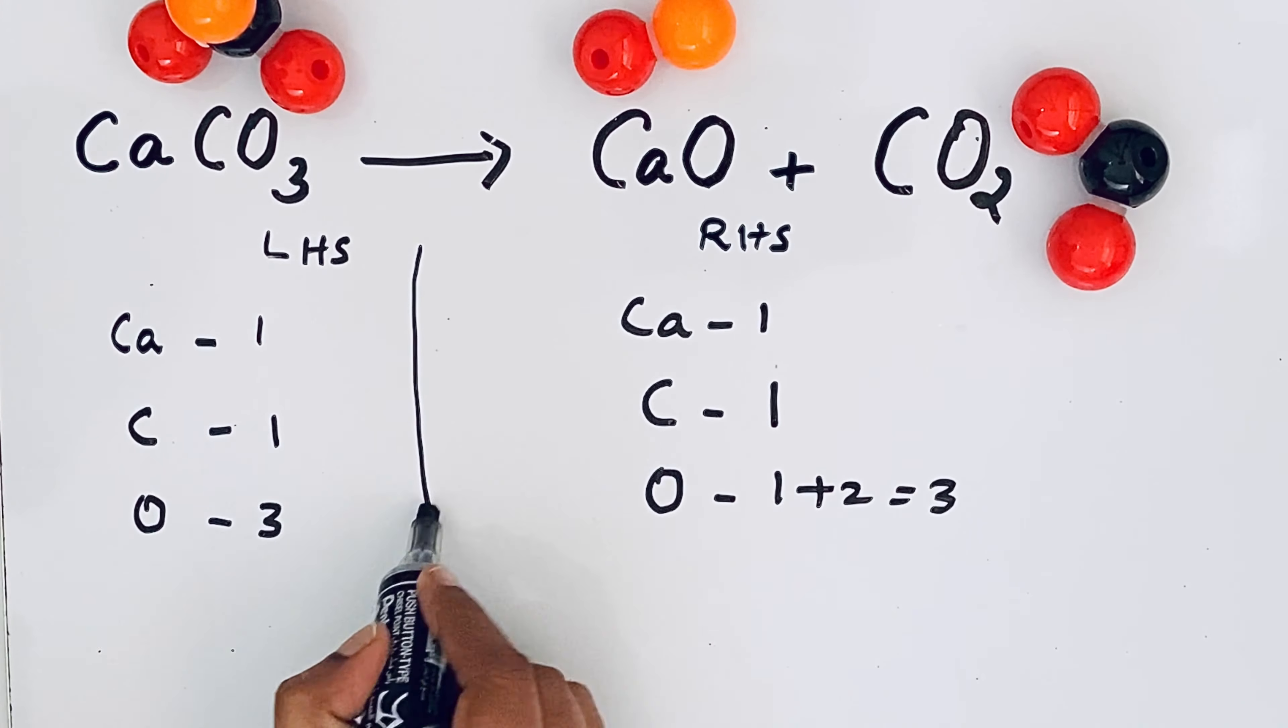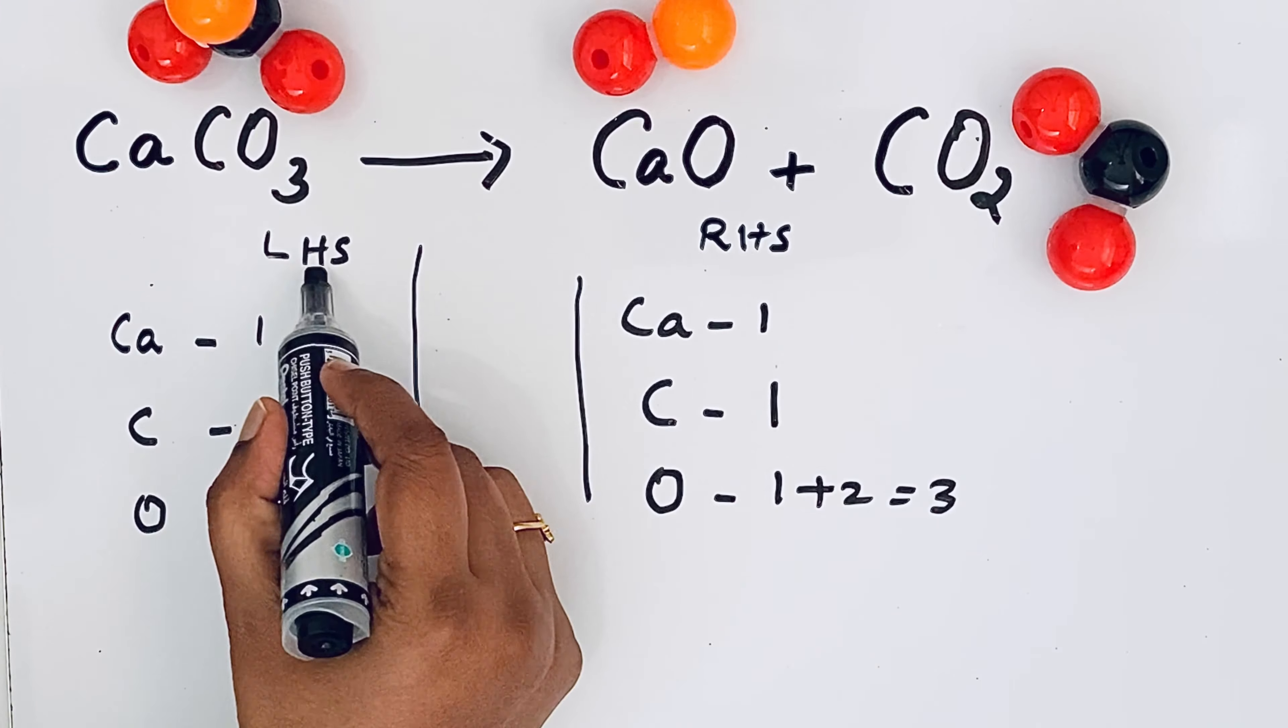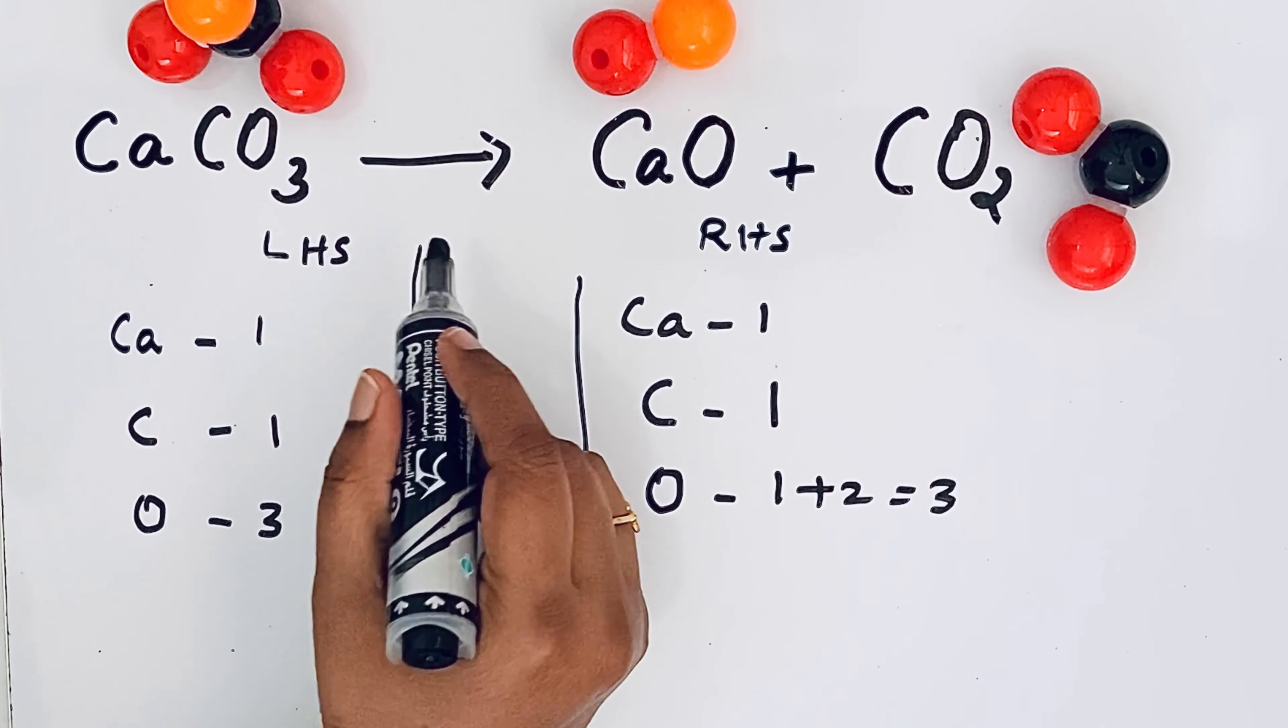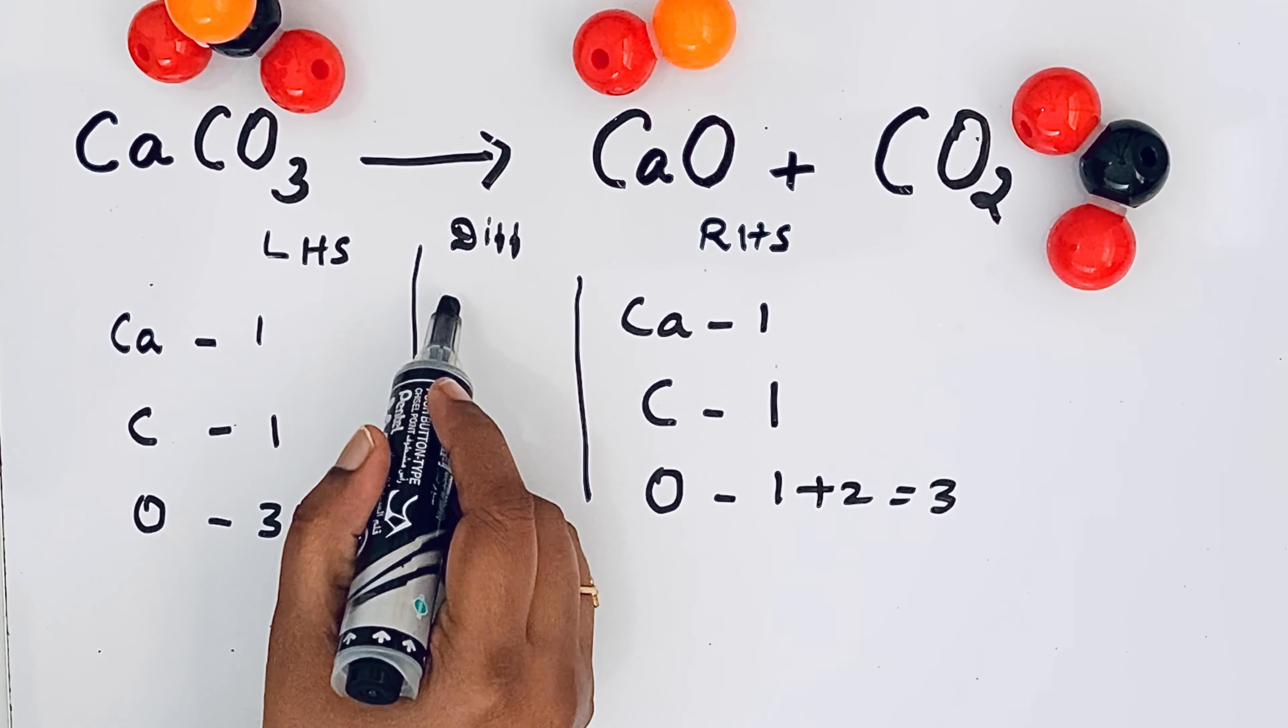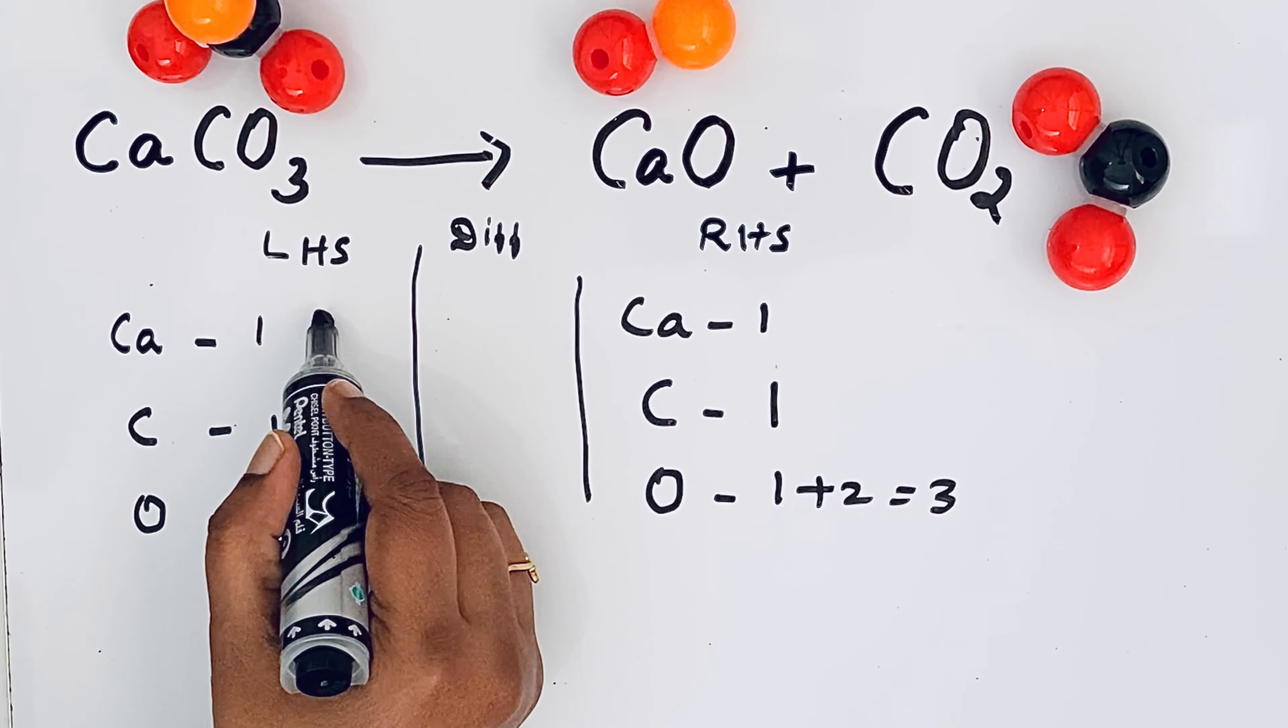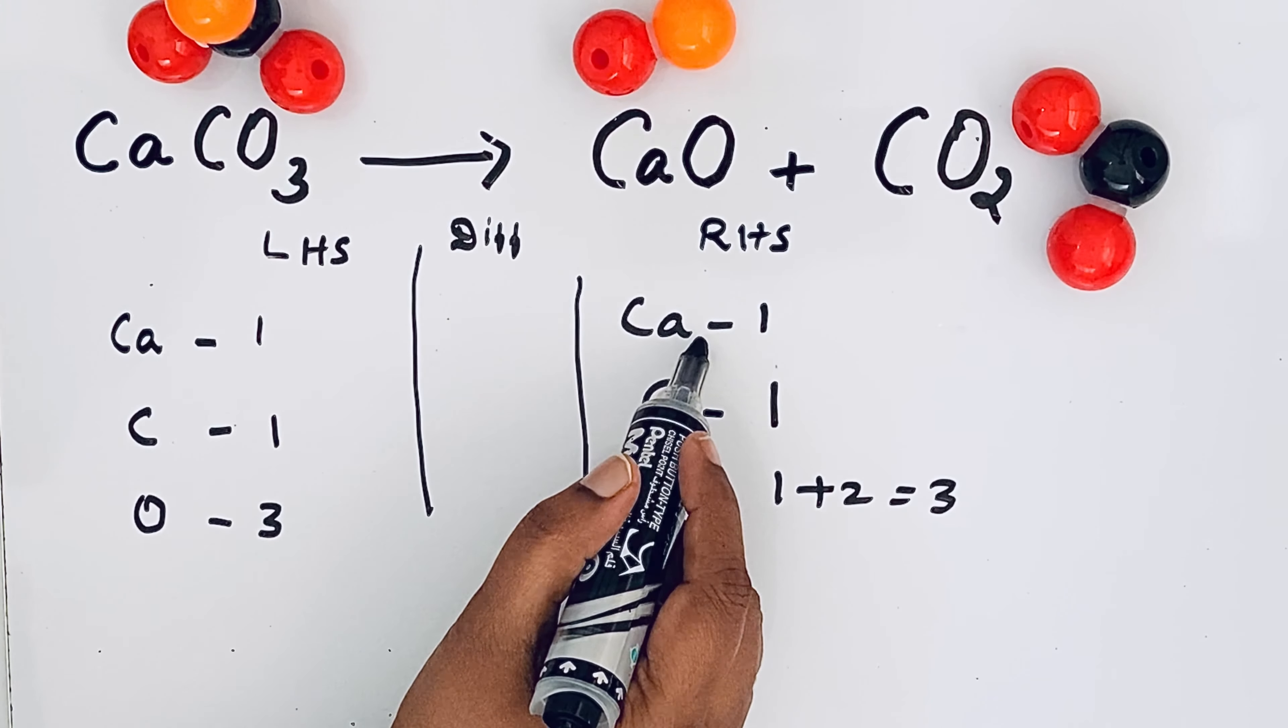Now we are going to draw a column between left hand side and right hand side. Here we are going to write difference. In this difference column we are going to write the difference between left hand side atoms and right hand side atoms.